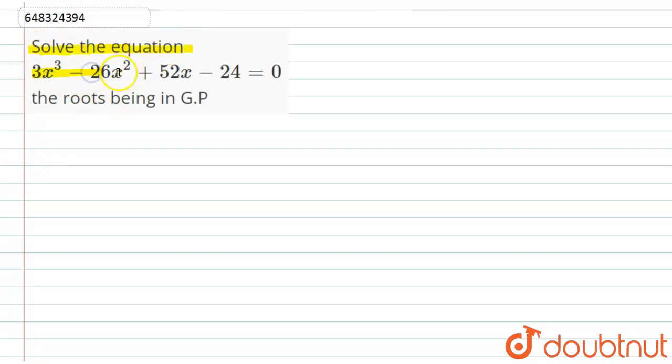the equation 3x³ - 26x² + 52x - 24 = 0, while it is given the roots being in GP, that is geometric progression. So let's see the solution here. Simply we have to